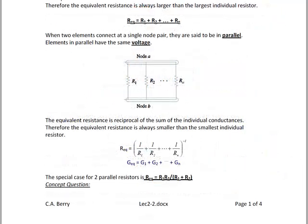Our next definition is parallel. When two or more elements connect at a single node pair, they are said to be in parallel. Elements in parallel have the same voltage. The key to parallel is that the elements have to be connected on both sides — top and bottom, or left and right — and they must have the same voltage.